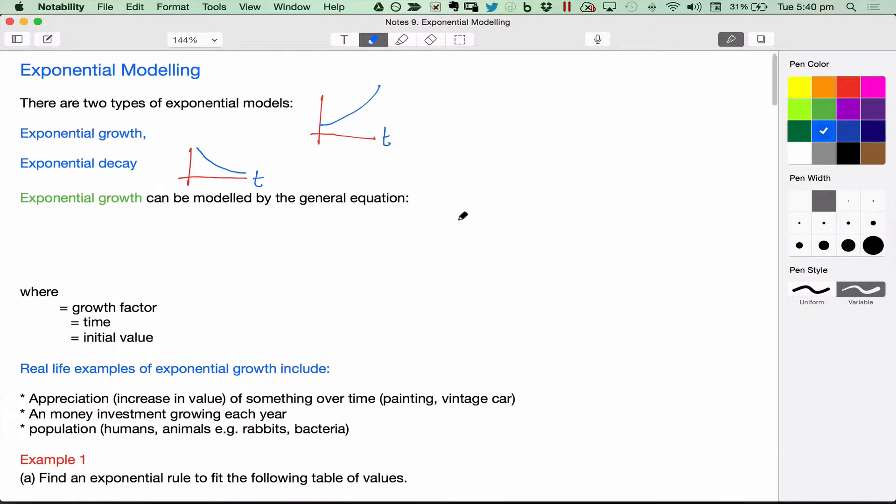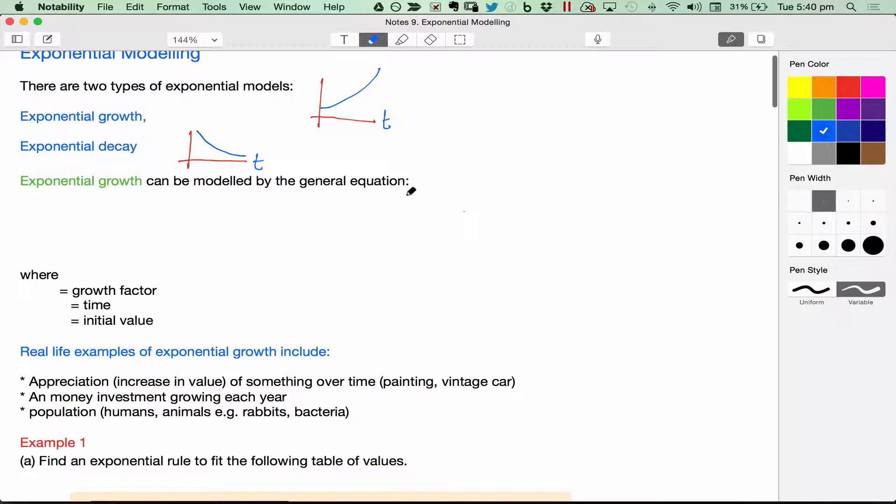The first one we're going to look at is exponential growth. And the general equation we can use to represent exponential growth is this one. There's a few different ones out there, but this is one that we're going to use. You might see other ones with a different letter here for the zero. It means the same thing. They're just represented with different pronumerals. What do all these letters mean?